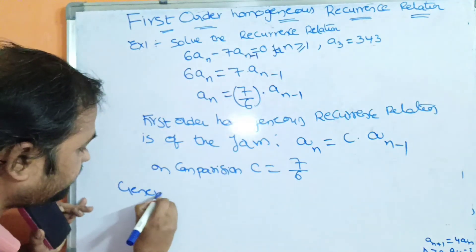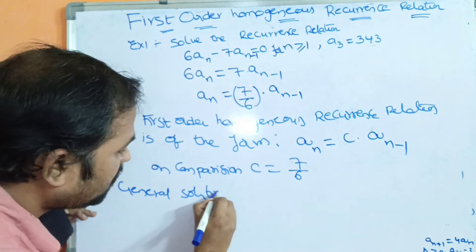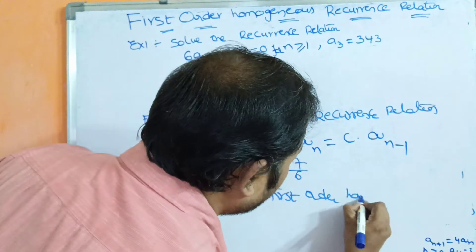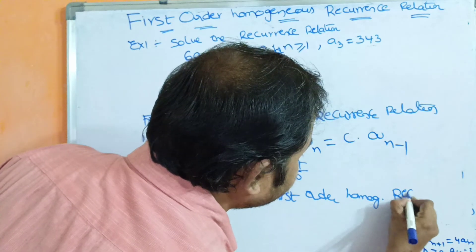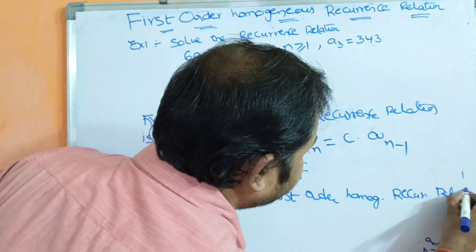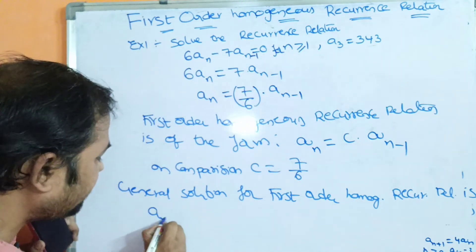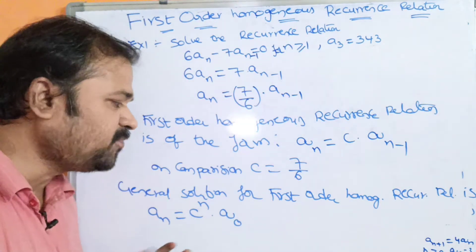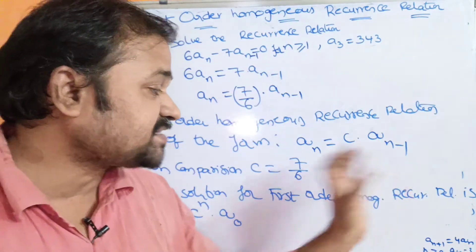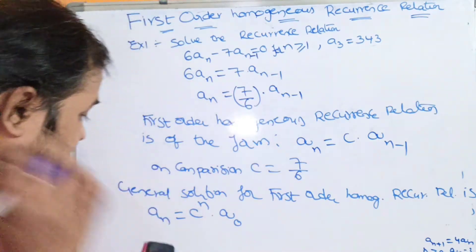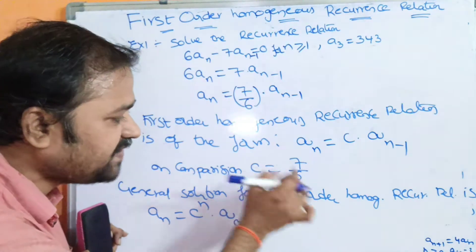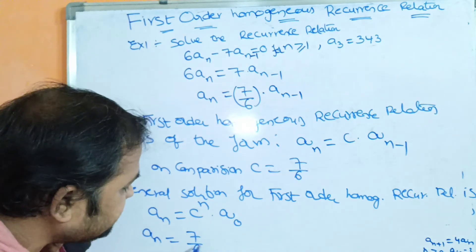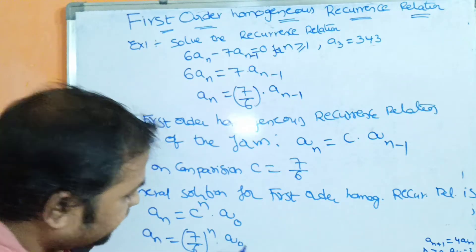The general solution for a first-order homogeneous recurrence relation is: AN = C^N · A0. Substituting C = 7/6, we get AN = (7/6)^N · A0.